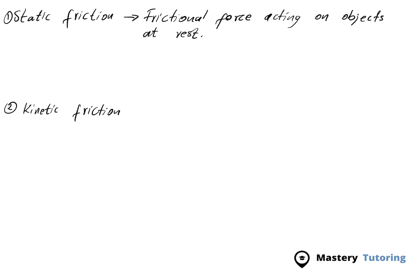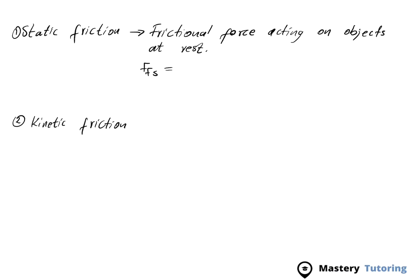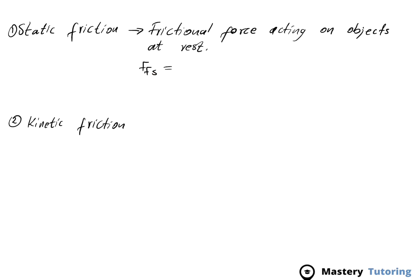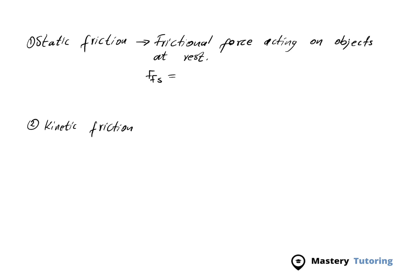Static friction resists the object's motion — it wants the object to remain at rest. The formula used to calculate static frictional force is FF_S equals mu_S times N, where S stands for static. This mu is for any object that is at rest.